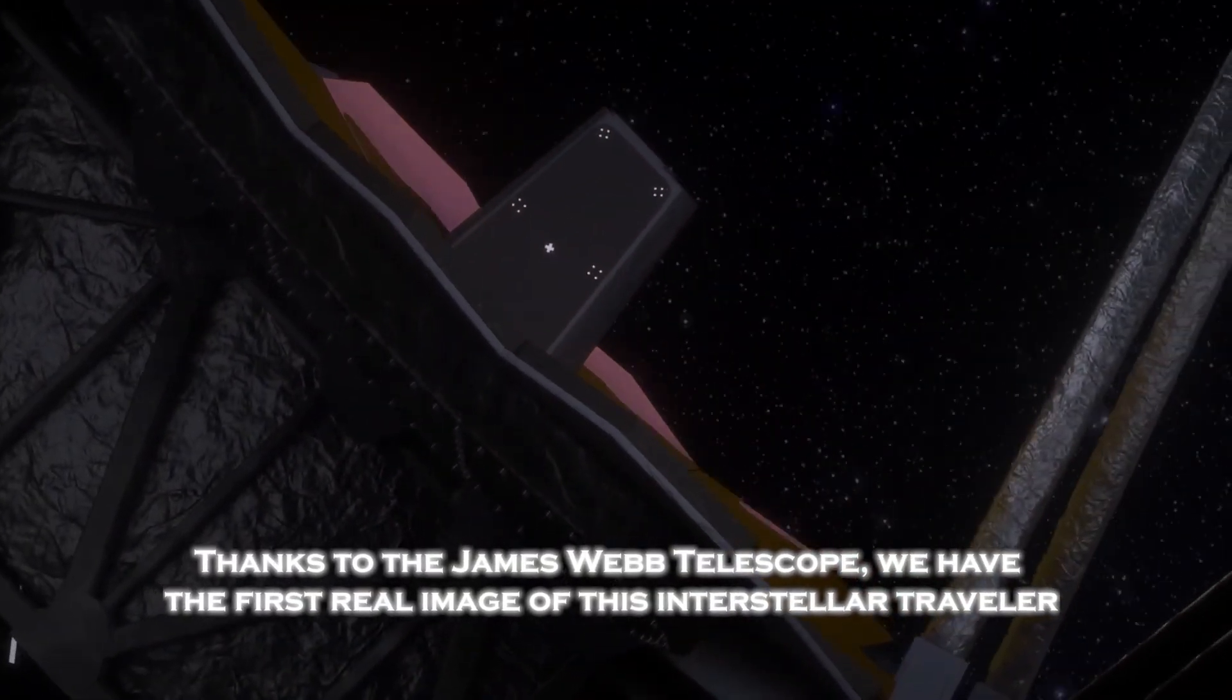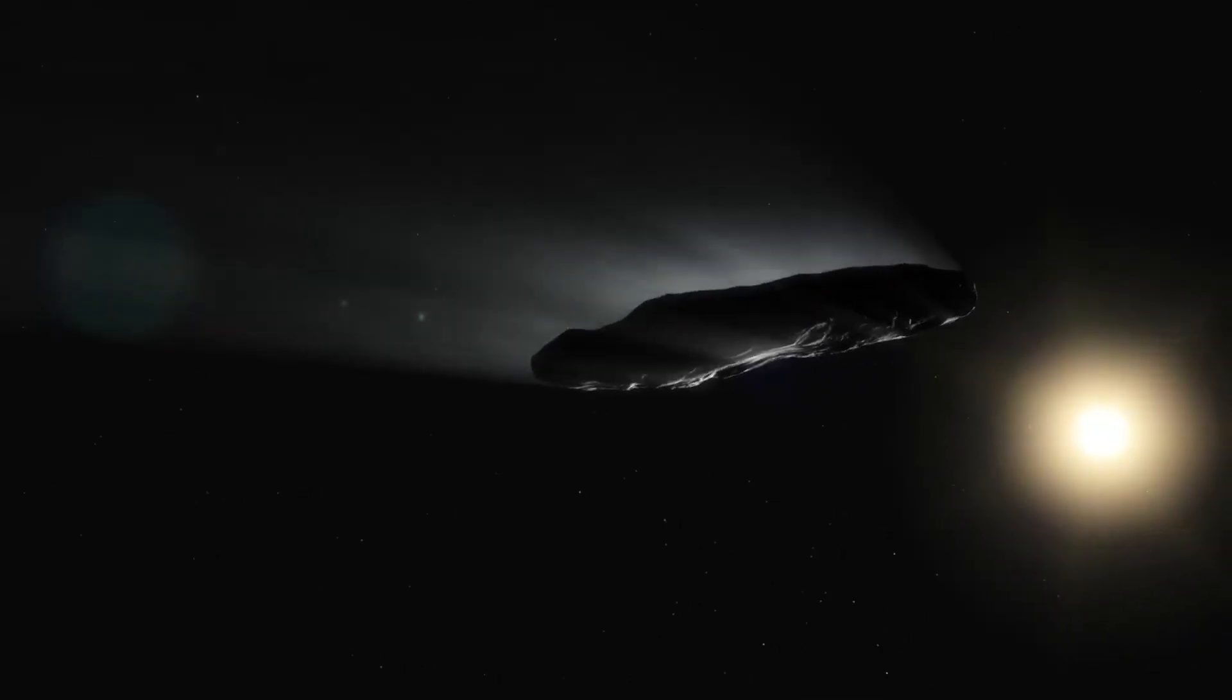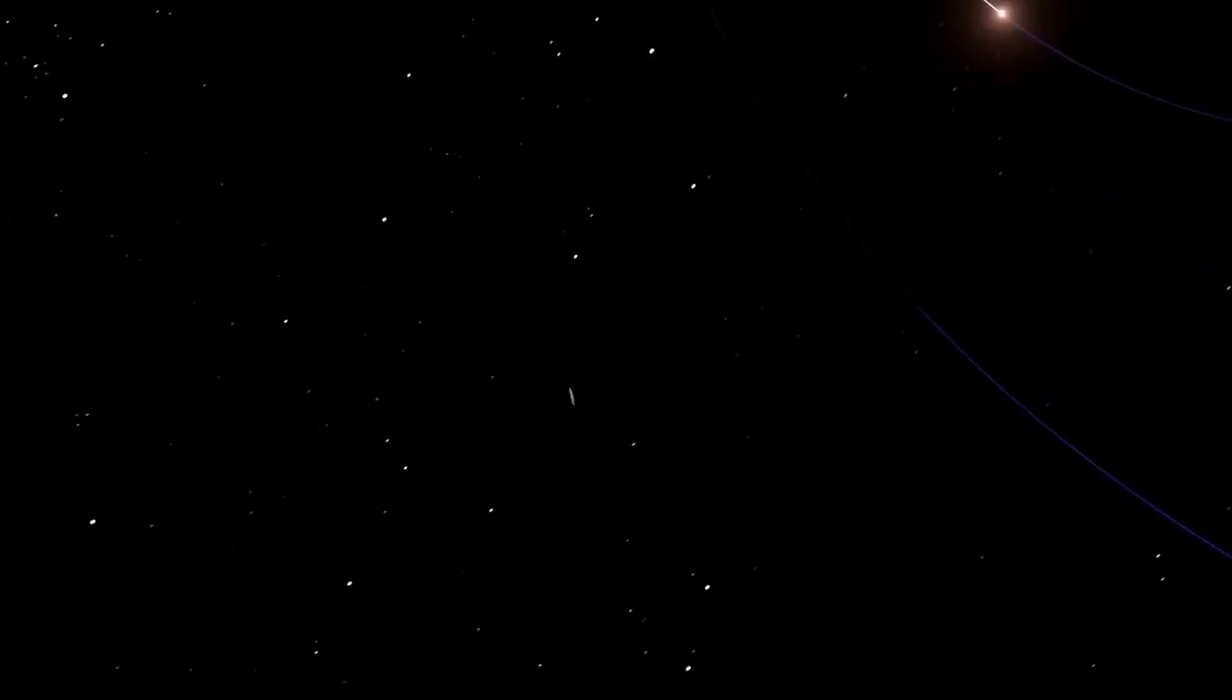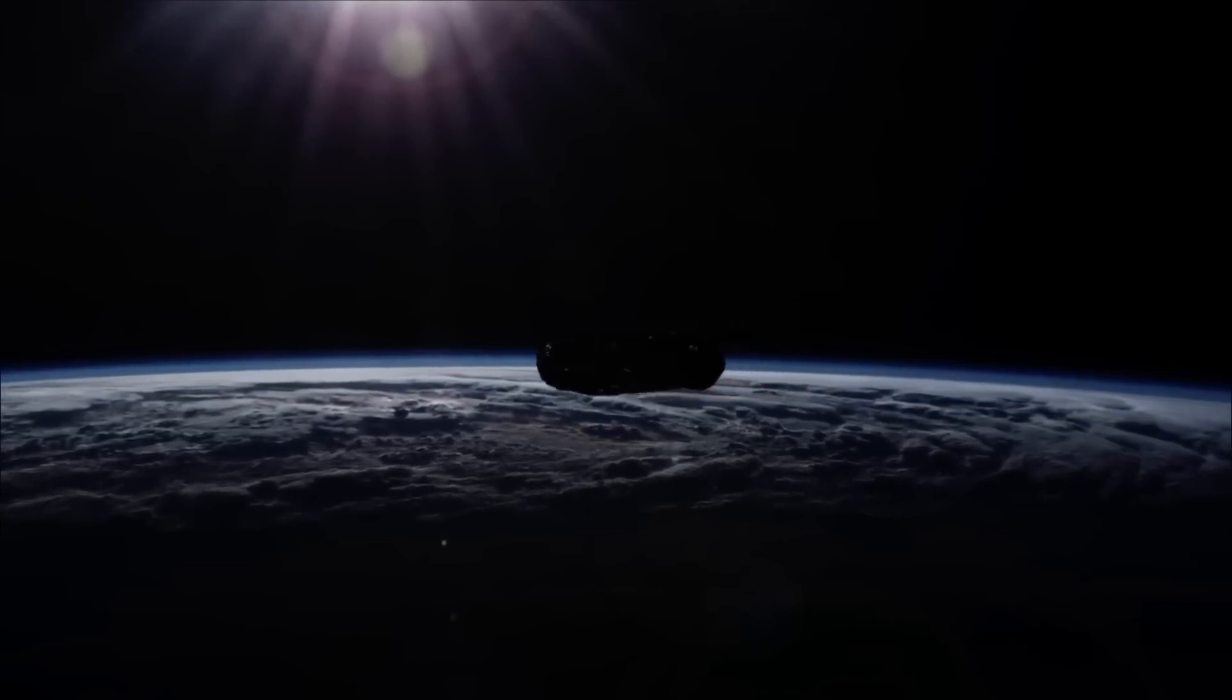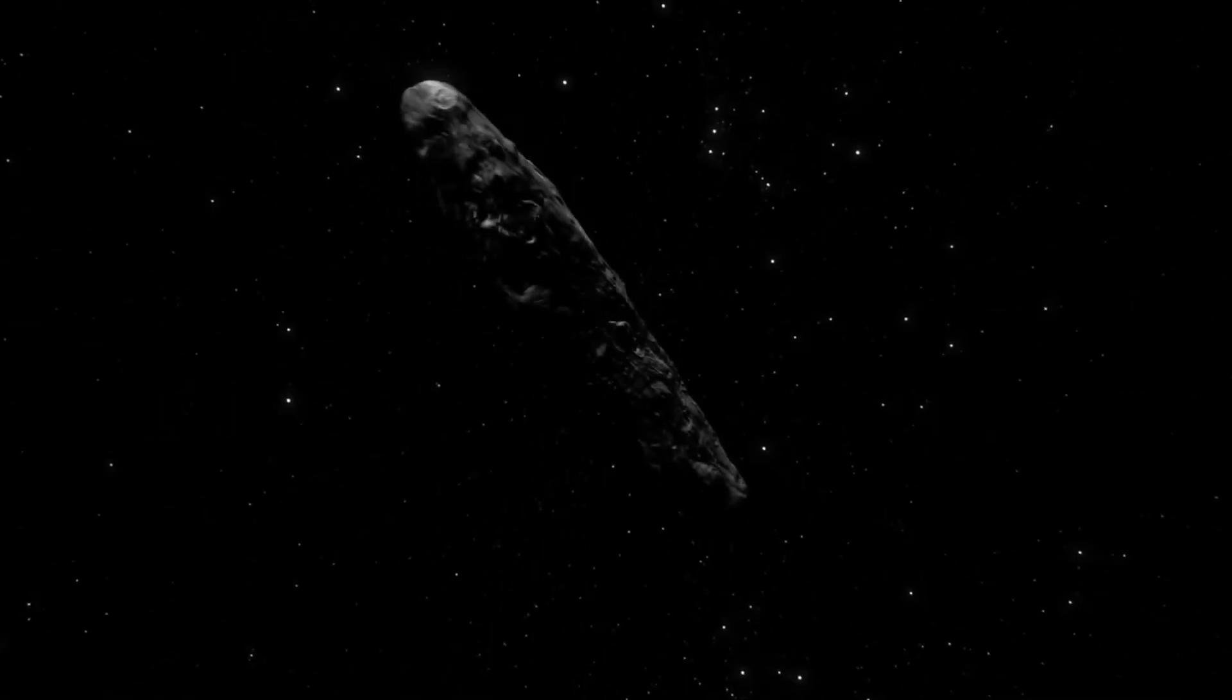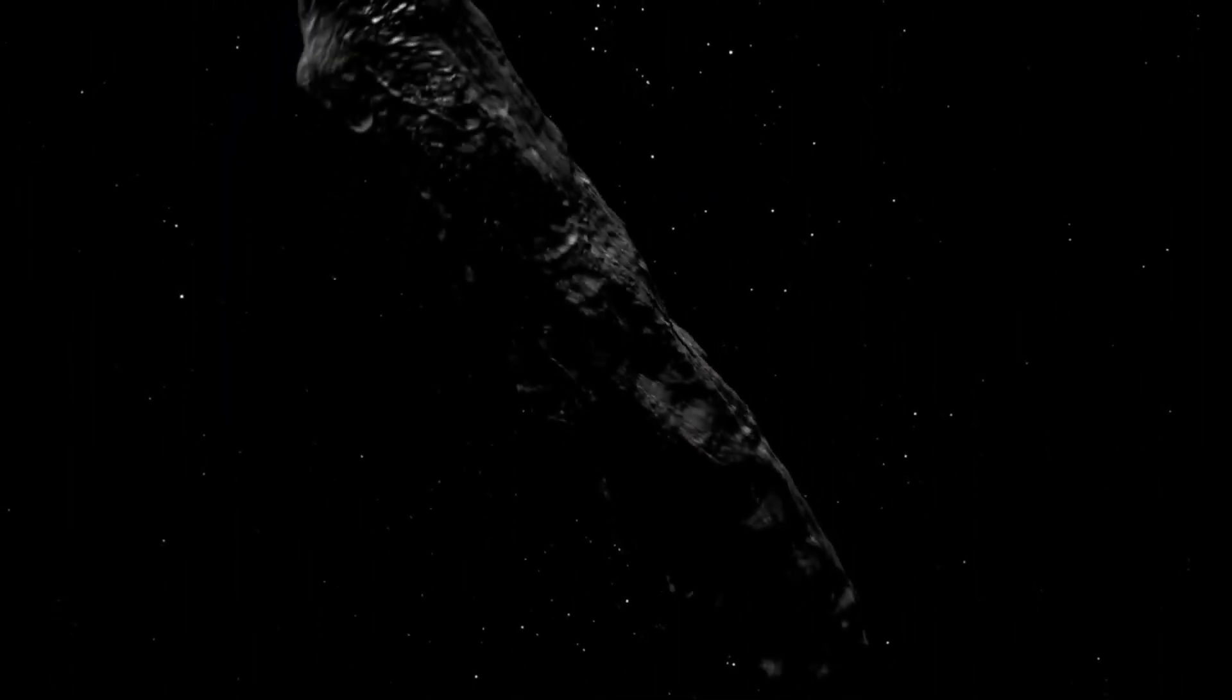Now, thanks to the James Webb Space Telescope, we have the first real image of this interstellar traveler. Oumuamua looked like nothing we'd ever seen before. Unlike comets, it had no visible tail and no signs of outgassing. And unlike asteroids, its acceleration away from the sun couldn't be explained by gravity or known forces. Since its discovery, hypotheses have been put forward, ranging from fragments of hydrogen ice to the possibility that it is a spacecraft designed by an advanced civilization. But no answer had been conclusive until now.